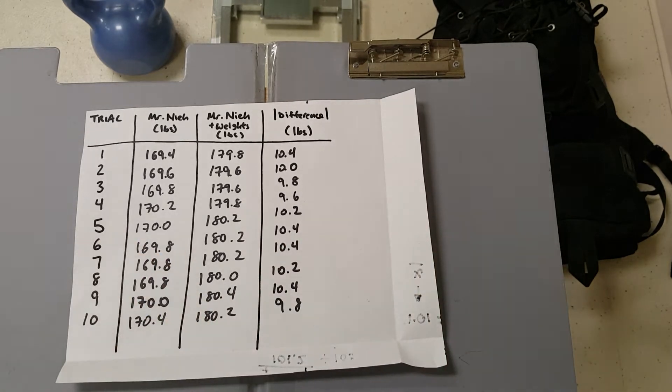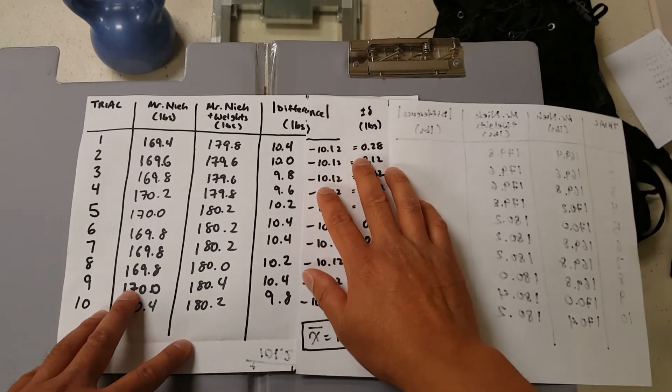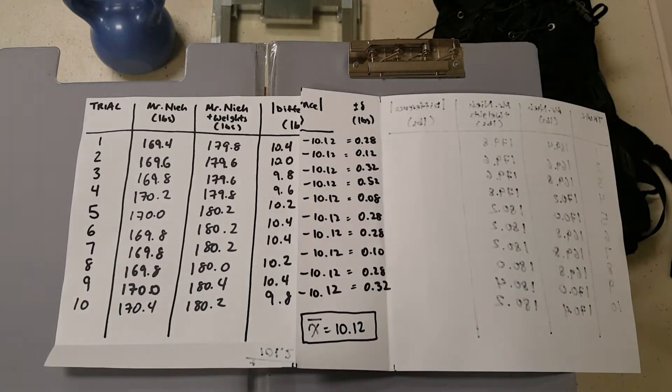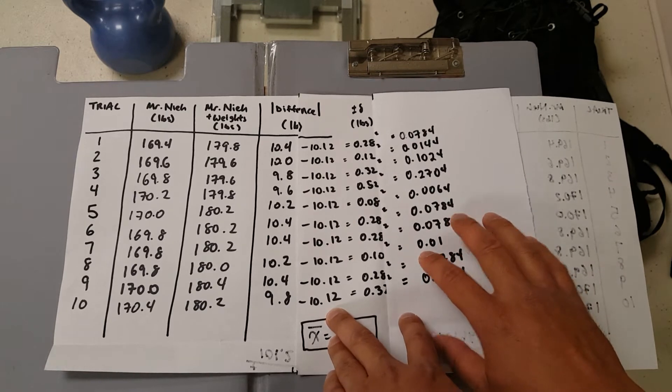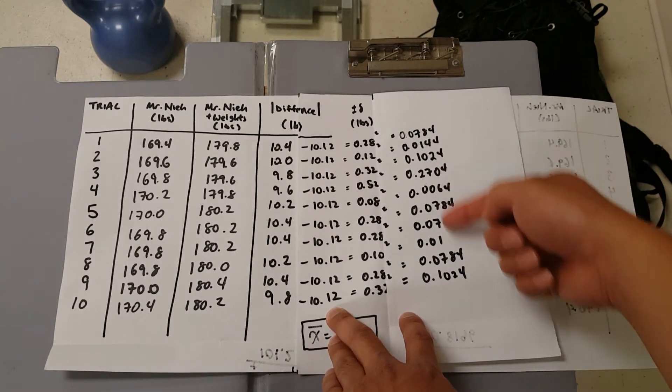The next step is to take all these points over here and subtract our 10.12 from the data points. And what we have over here is our deviation. We take our deviation and then we square it. And that gives us this subset of data.